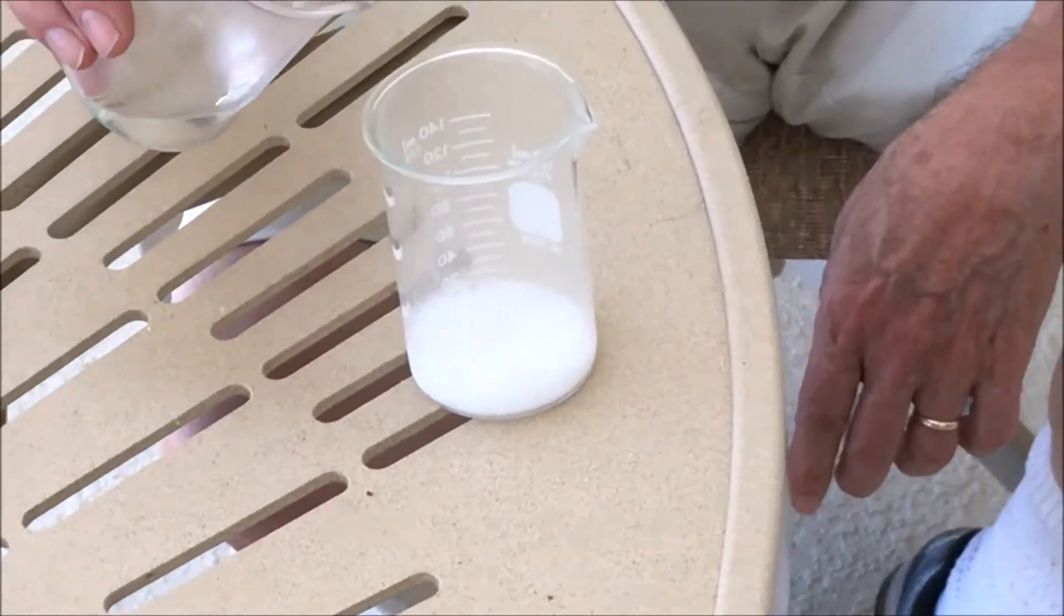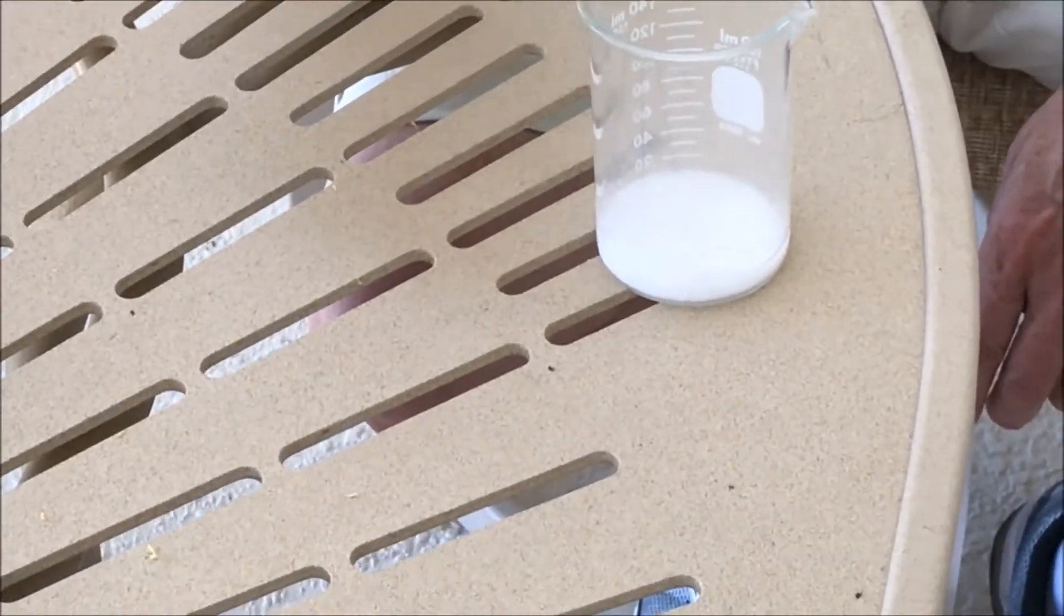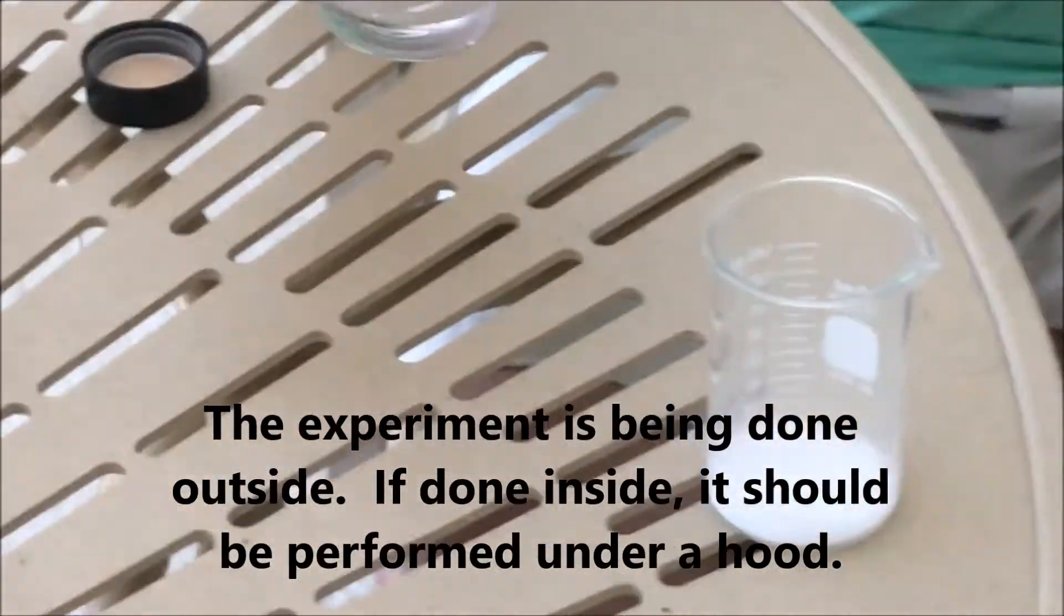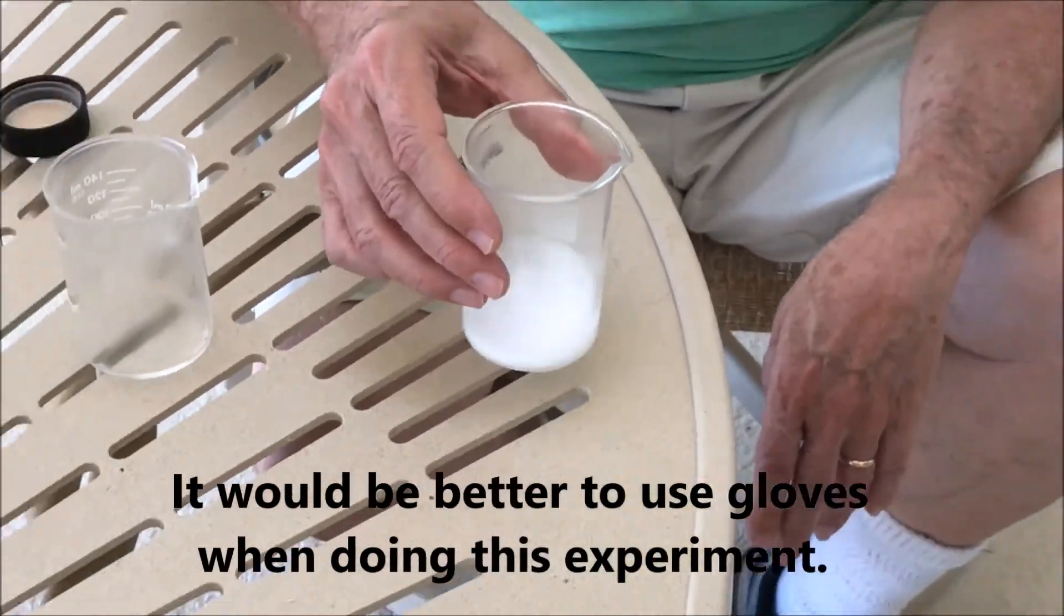As you can see, bubbles are coming off, and that's carbon dioxide. The hydrochloric acid is kind of volatile because it's a gas dissolved in water.